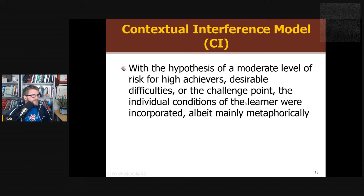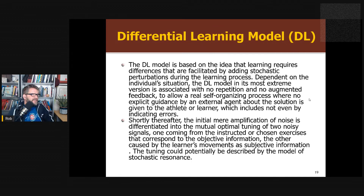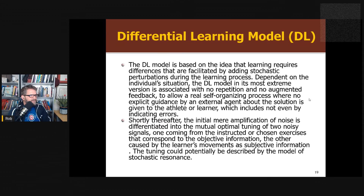They also talk about how contextual interference brings in the idea of challenge point into the model as well. The last model they discuss is differential learning, and they give a definition. Quote: 'The differential learning model is based on the idea that learning requires the differences that are facilitated by adding stochastic perturbations during the learning process. In its most extreme version, it is associated with no repetition and no augmented feedback to allow a real self-organization process where no explicit guidance by an external agent about the solution is given to the athlete or learner, which includes not even indicating errors.'